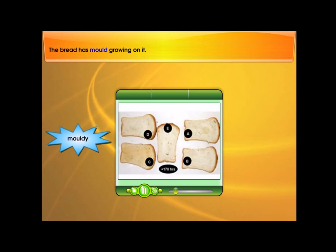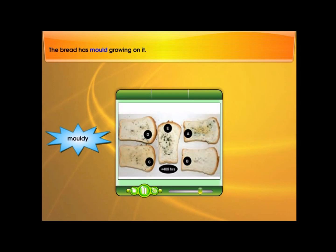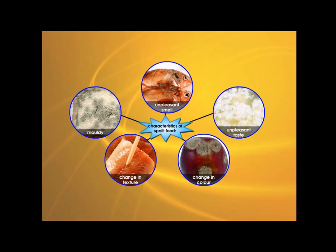The bread has mold growing on it. Spoiled food has the following characteristics: unpleasant smell, unpleasant taste, change in colour, change in texture, and mould. Different types of food show different characteristics when they become spoiled.